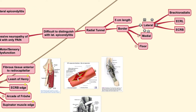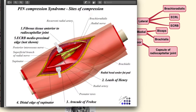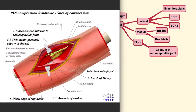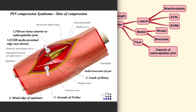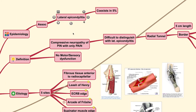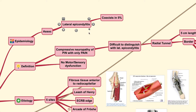The radial tunnel syndrome has several structural borders. The lateral border comes from the brachioradialis muscle. The floor of the radial tunnel is made up of the capsule of the radiocapitellar joint — this is the radius, this is the capitellum. This short area is known as the radial tunnel, and this condition is also frequently associated with lateral epicondylitis.